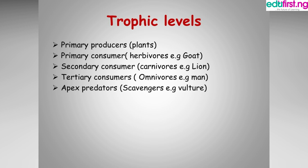Next is the primary consumers — that's the herbivores — then the secondary consumers, the tertiary consumers, and finally the apex predators.